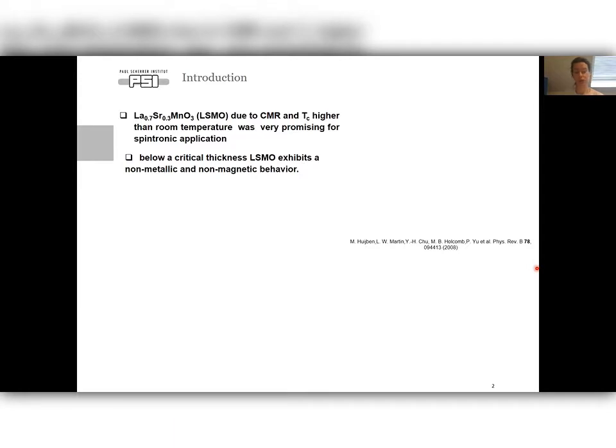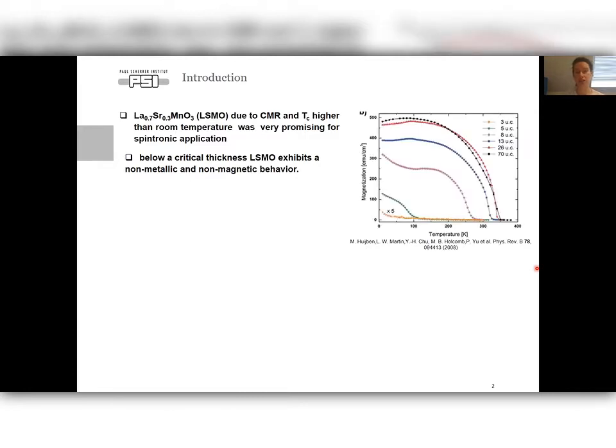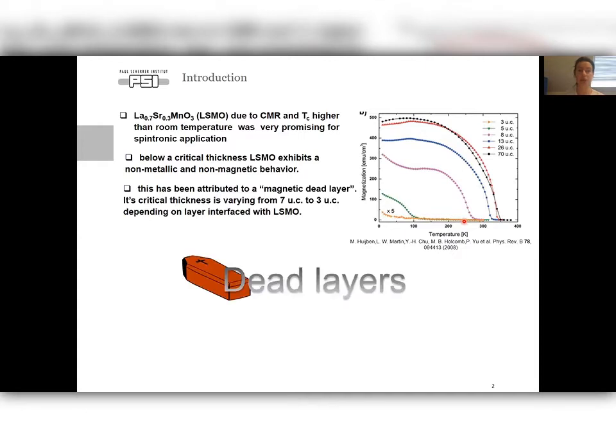In our previous works, we reported dramatic reduction of magnetic and metallic properties of LSMO in ultrafine limit that limits LSMO application. As you can see here in the figure of magnetization versus LSMO thickness given in unit cells, magnetization drops dramatically as a function of thickness, and already at 3 unit cells is not magnetic at all. It has been attributed to a magnetic dead layer. Its critical thickness is varying from 7 unit cells to 3 unit cells depending on the layer interface with LSMO.